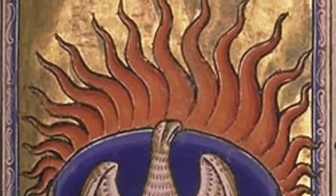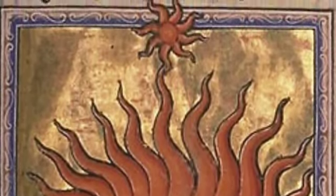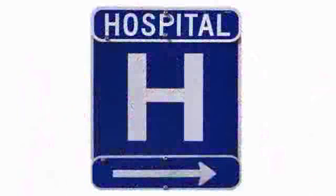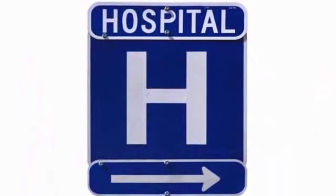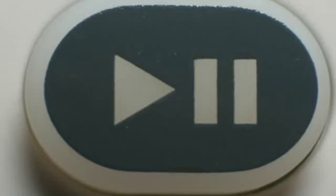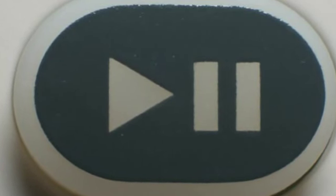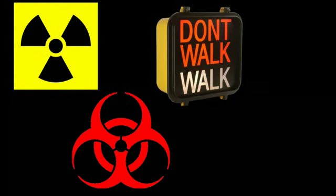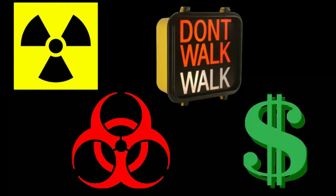But let's think about that. Imagine a backward universe where the meaning of symbols is arbitrary and random — a world where hospital signs lead to fire stations and elementary schools, where the play and pause symbols have no bearing on what the buttons actually do, where radiation signs, biohazard symbols, don't walk signs, and dollar signs are placed randomly throughout the city and used interchangeably. If used randomly and without repeating contexts, the symbol fails to be a symbol at all.